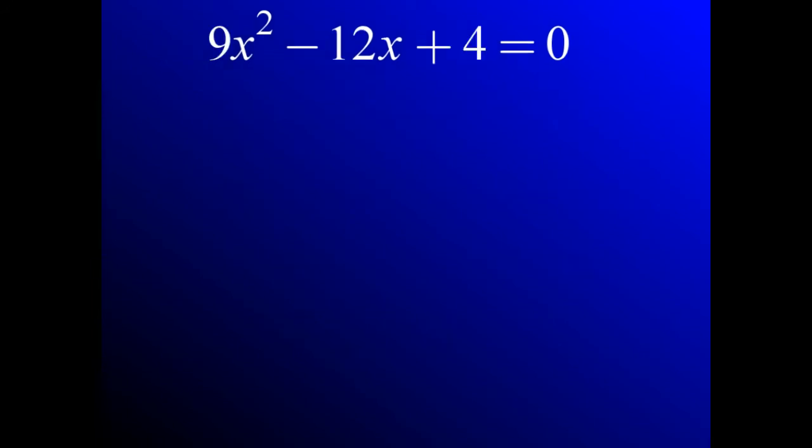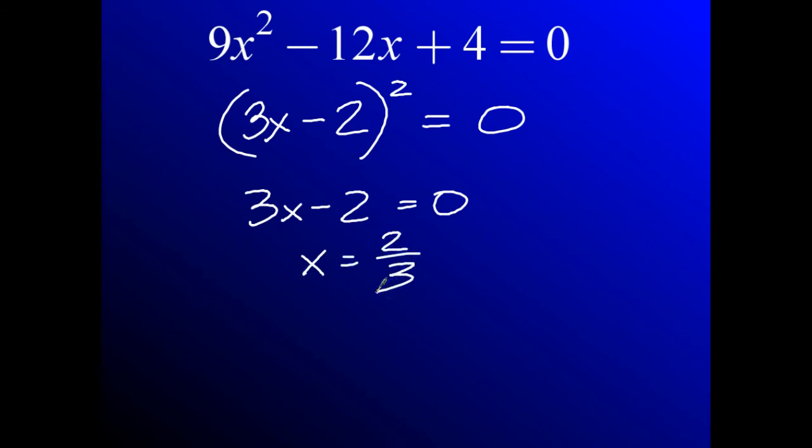9x squared minus 12x plus 4. I'm looking at this and saying, is the beginning a perfect square, is the end a perfect square, and is the middle the square root times the square root times 2? I'm looking at this and saying perfect square, so that would be 3x plus 4, but minus 12, so minus, the square root of 4 is 2. Is this squared? I'm going to do 3x times 2 is 6, 6 times 2 is 12, and it works. So I've got 3x minus 2 equals 0, x equals 2 thirds. And again, this answer is repeated twice because there's 2 of those.